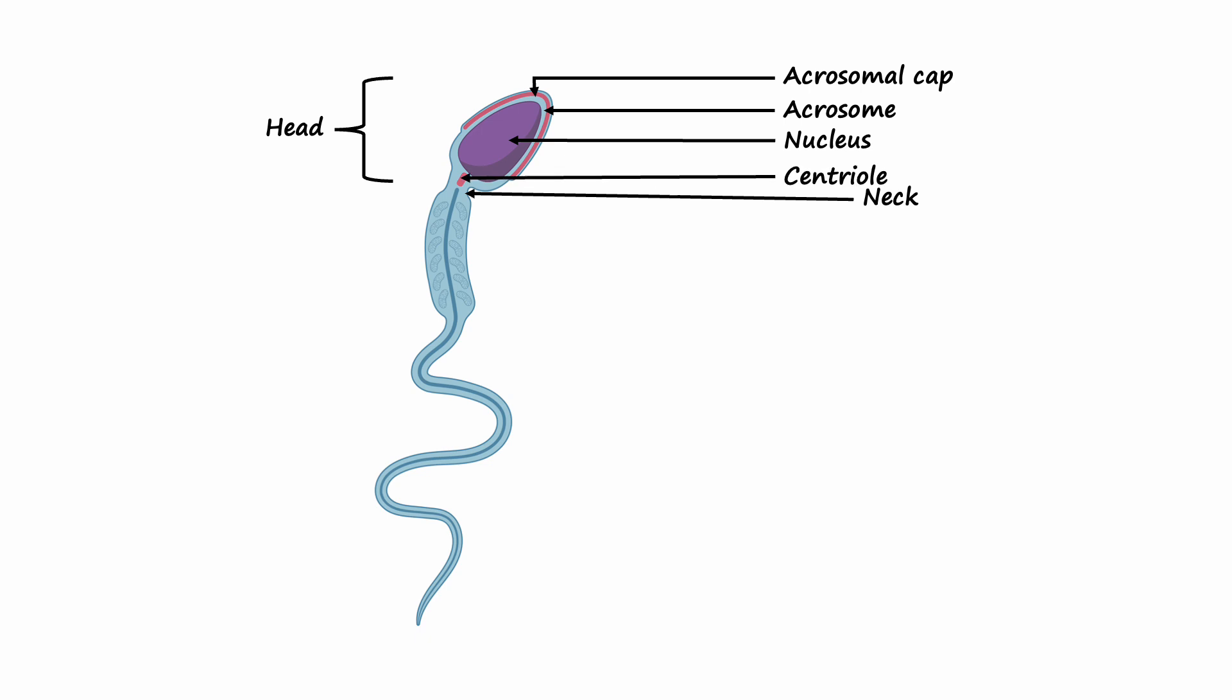Centriole: The centriole plays a crucial role in cell division. It helps organize the spindle fibers during cell division, ensuring that the chromosomes are properly distributed to the daughter cells.